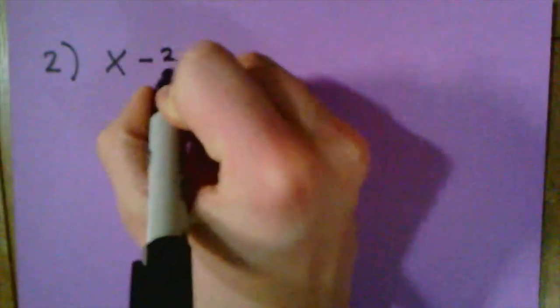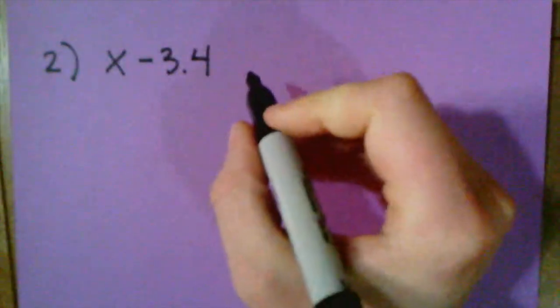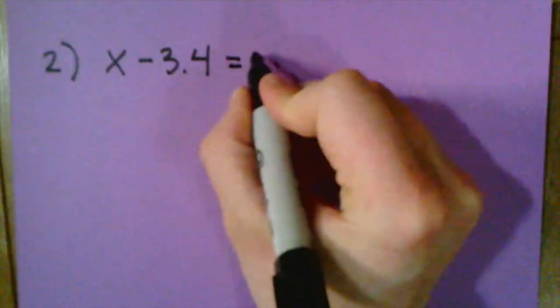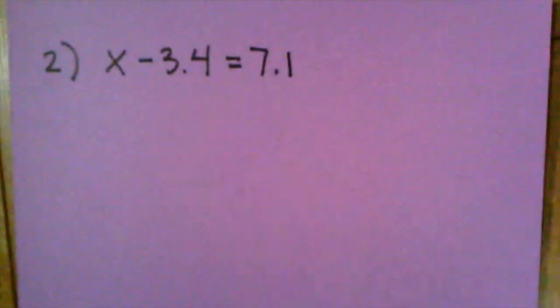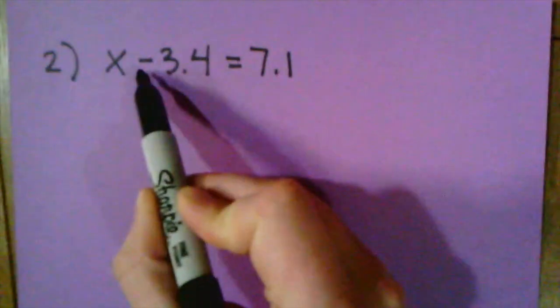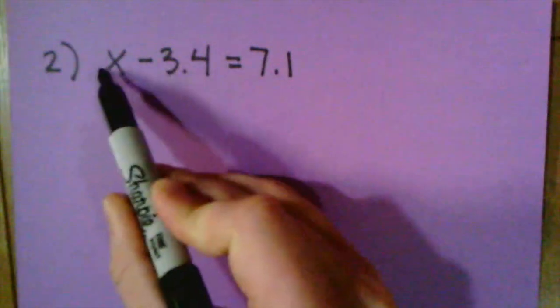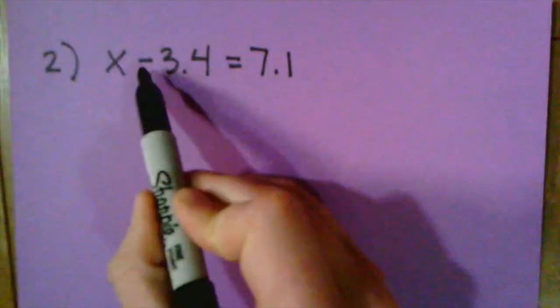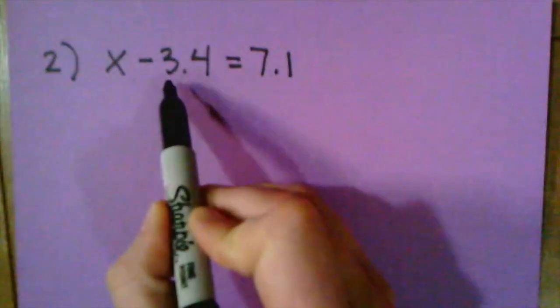For our second example, we'll try using some decimals to see if our inverse operations can still help us there. We have X minus 3.4 equals 7.1. Now decimals can be a little bit tricky, but if we use our inverse operations, we can easily solve this one here. Right now we currently have X and on the same side we have a minus 3.4. We want to get X on the side by itself, so we want to get rid of this minus 3.4.